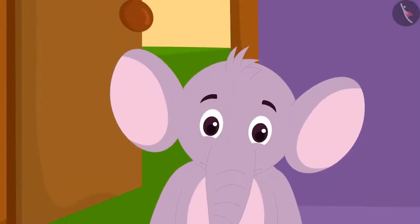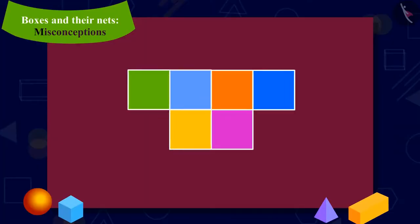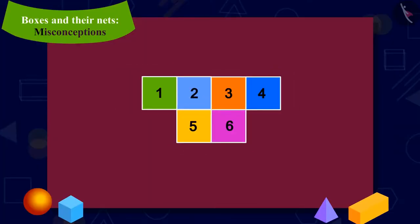Appu was once again shocked. Hey, this figure did have six surfaces and all the surfaces were square. Yet, I could not make a cube from it.